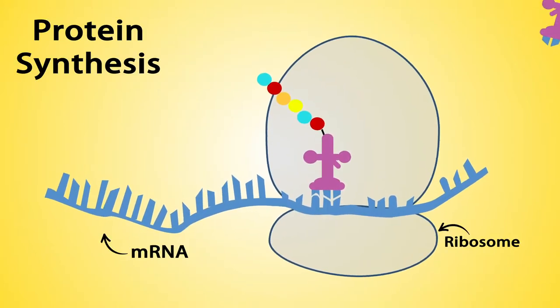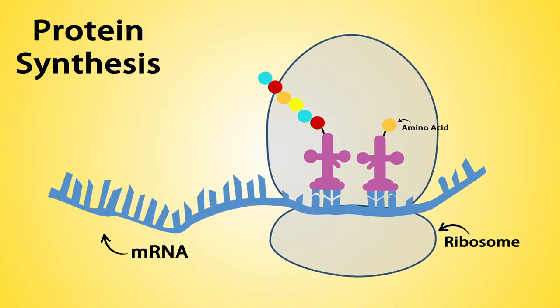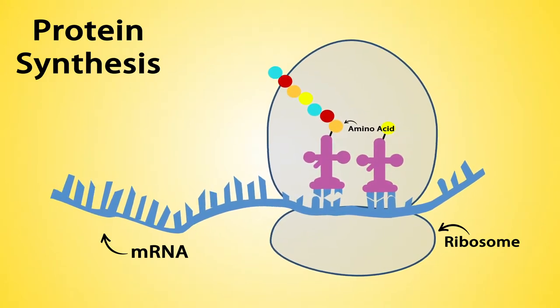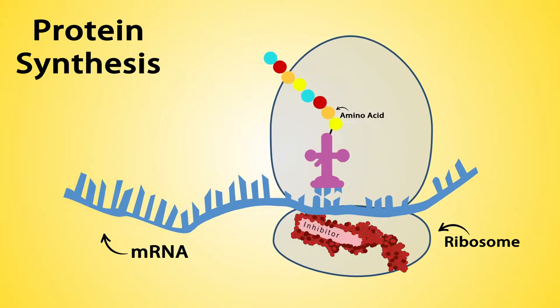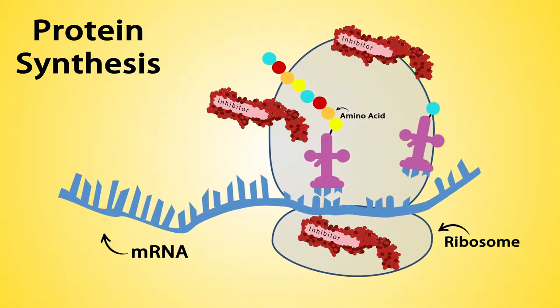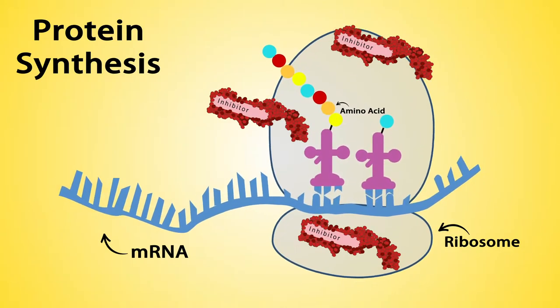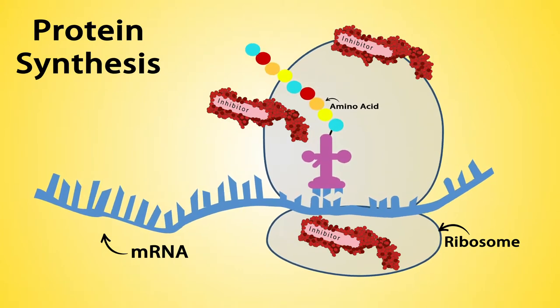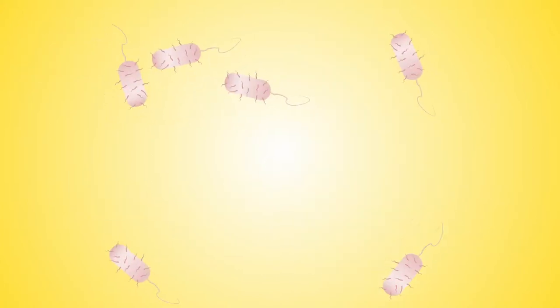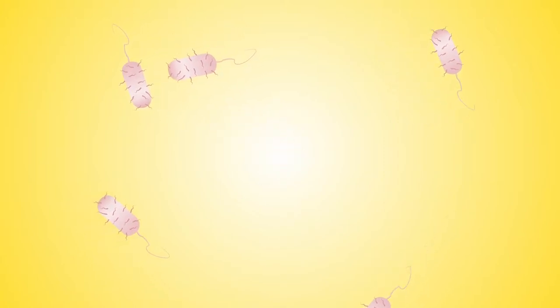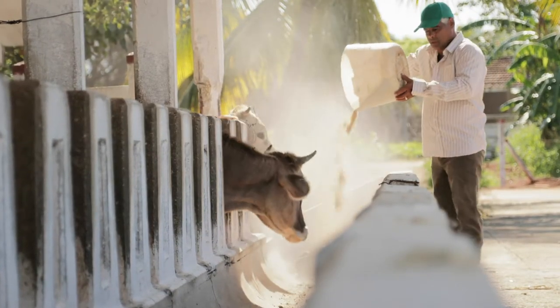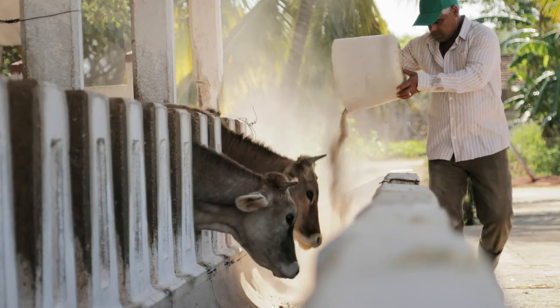Enzymes and cellular structures are primarily made of proteins. Protein synthesis is an essential process necessary for the multiplication and survival of all bacterial cells. Inhibitors of bacterial protein synthesis include several types of antibacterial agents that target protein synthesis by binding to various ribosomes, disrupting normal cellular metabolism and leading to the death of the organism or stopping of its growth.